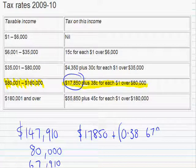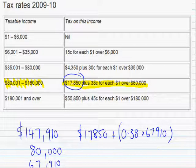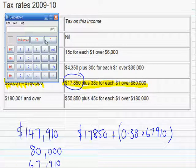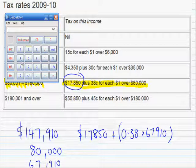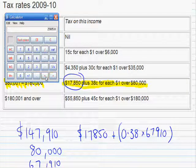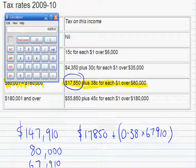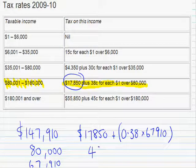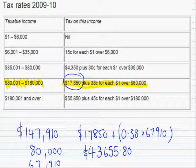So $67,910 are the ones that you're going to be paying $0.38 in the dollar for. We'll get the calculator and work this out: 0.38 times $67,910 equals $25,805, plus $17,850 equals $43,655. And you'd better believe that the tax department will want that extra $0.80.